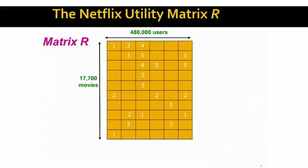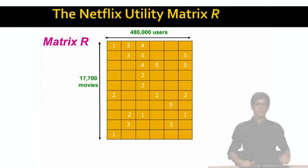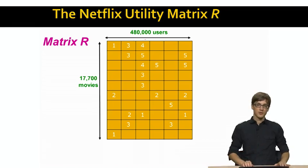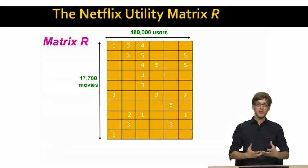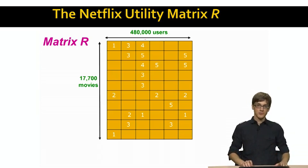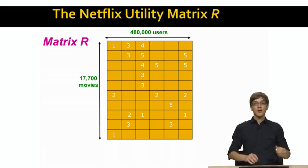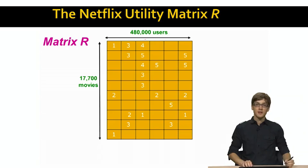We can think of our ratings data in terms of the utility matrix R. The way this matrix is composed is that rows correspond to movies and columns correspond to users. Most of this matrix is empty, in the sense that most users haven't seen most of the movies. But whenever a user sees a movie and rates it, that represents an entry in this matrix.